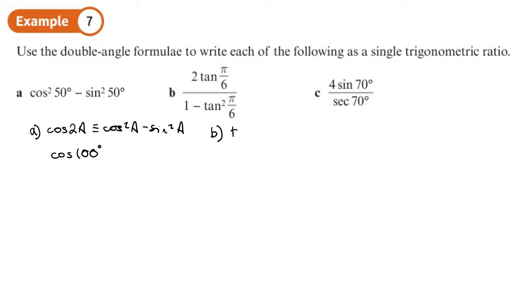Part b, the double angle for tan. So tan 2a would be 2 tan a over 1 minus tan squared a, and it fits the pattern. So that's the same as tan 2 times pi over 6, which would be pi over 3. It doesn't say write, it just says write it as a single trig ratio. Okay, we've done that, so we don't need to work out what pi over 3 is.